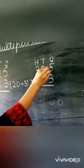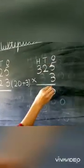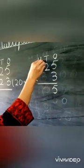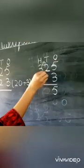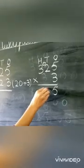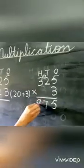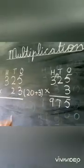3 times 5 is 15. 1 carry to 10s house. 3 times 2 is 6, that is 1, 7. 3 multiplied by 3 is 9. We have 975.